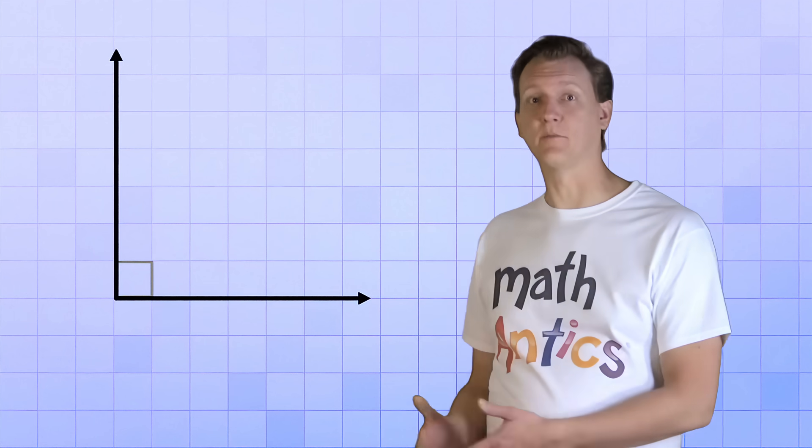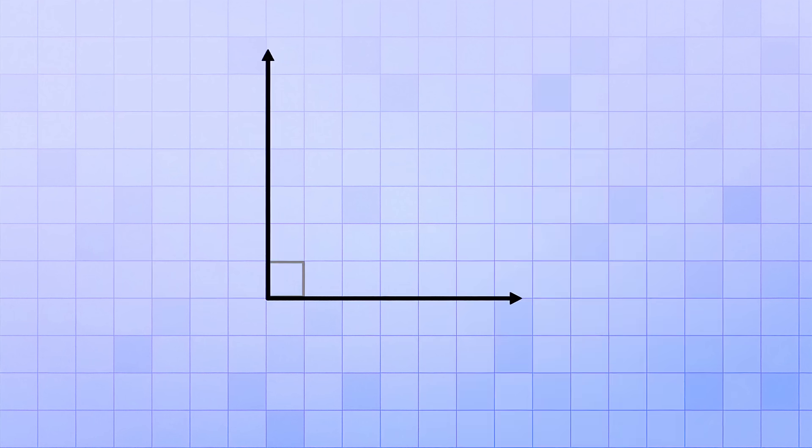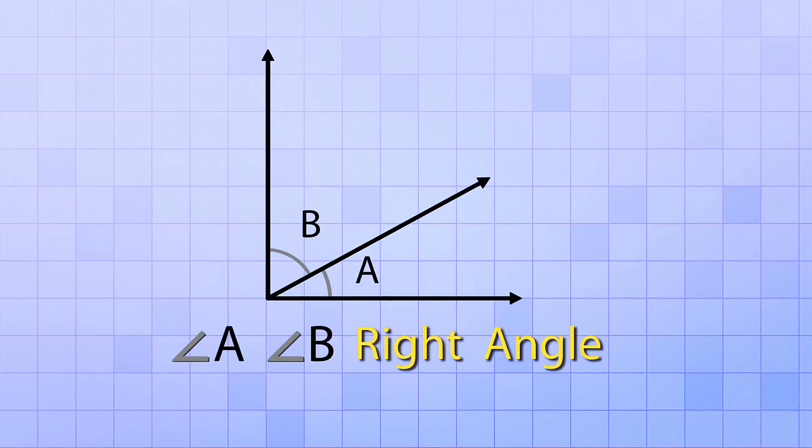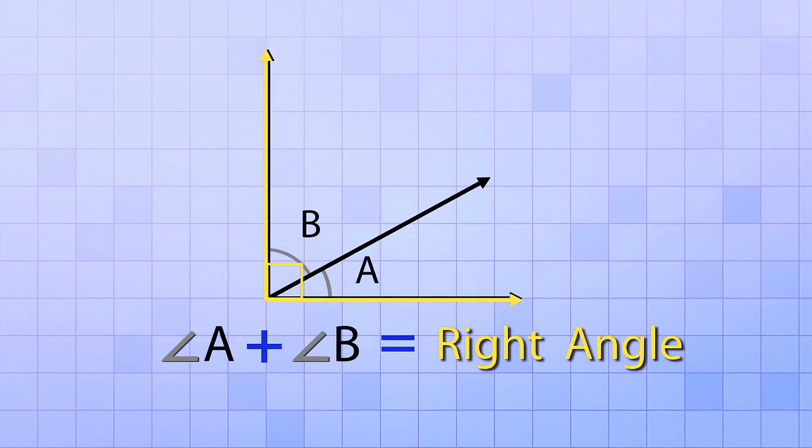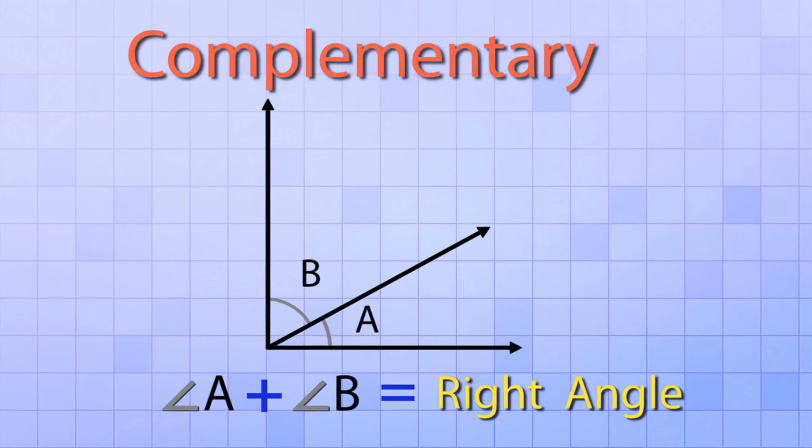Alright then, there's just a few more important geometry terms that we need to learn in this video. Let's look at our simple right angle again that's made from two rays. But this time, let's draw a third ray that cuts that right angle into two smaller parts. Now because the angle that we divided up was a right angle, we know that the two smaller angles combine to form a right angle. And in geometry, any two angles that combine to form a right angle are called complementary angles.